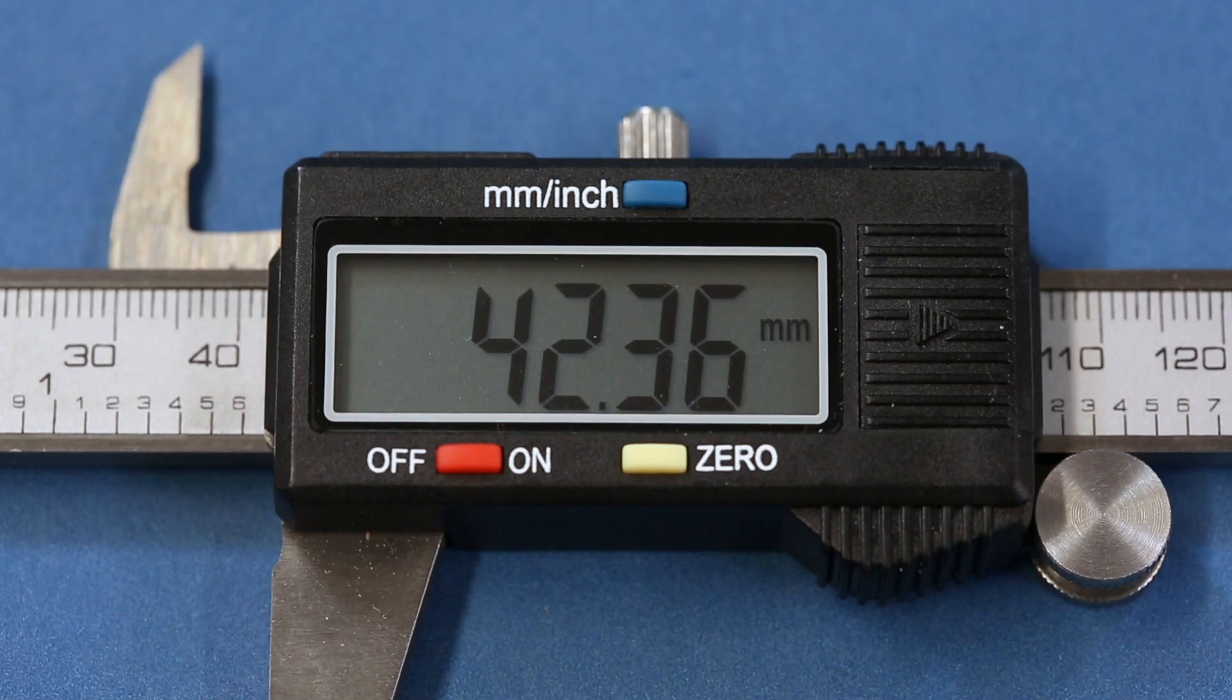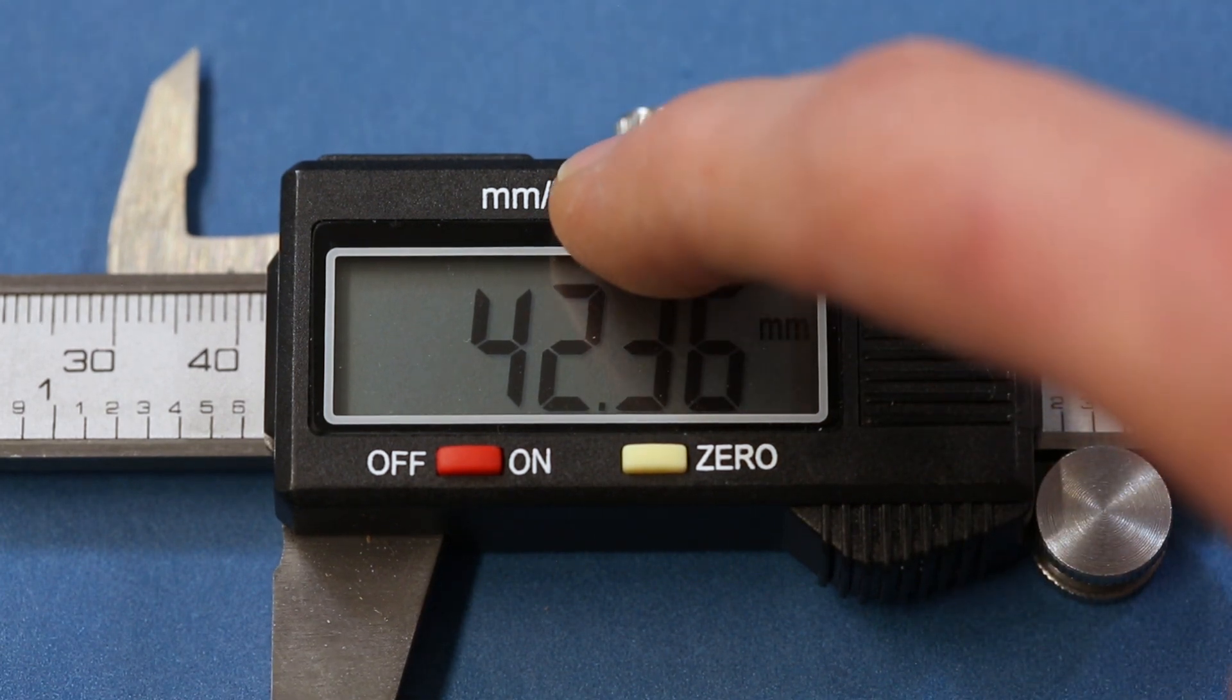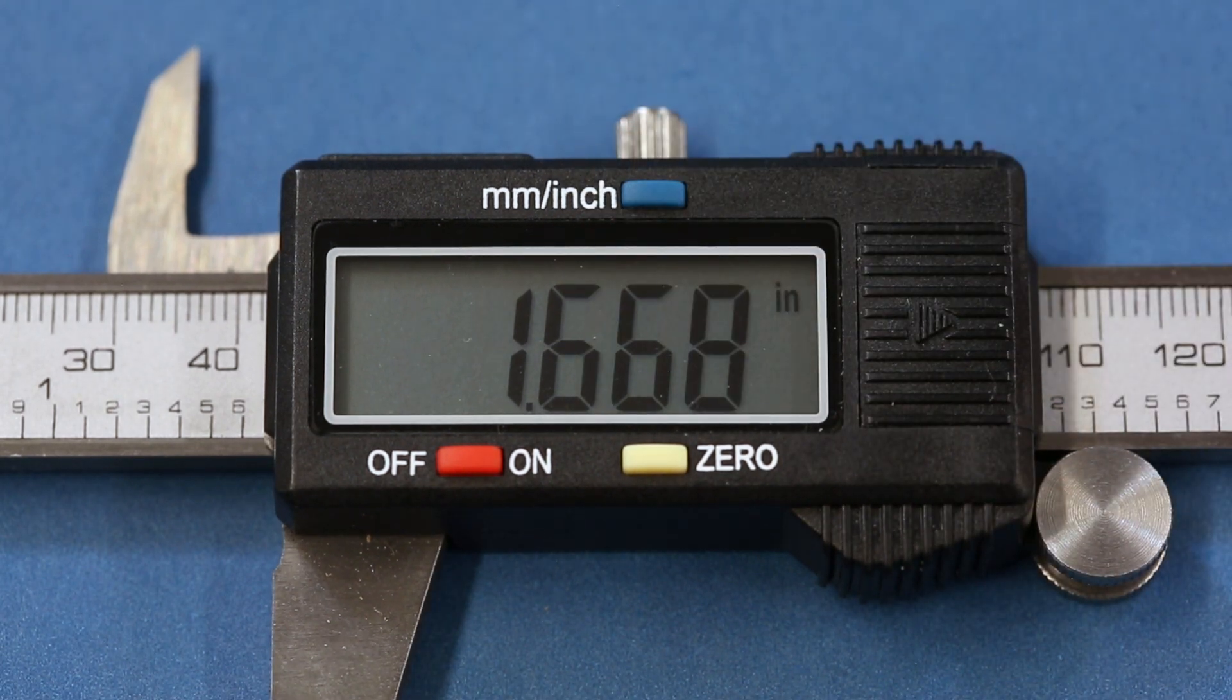We'll start with digital calipers since they're the easiest. Assuming the calipers were on and zeroed when you started, you can just read the numbers right off the display. And many digital calipers include a button to change units between inches and millimeters.